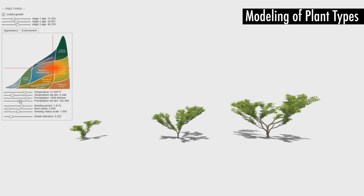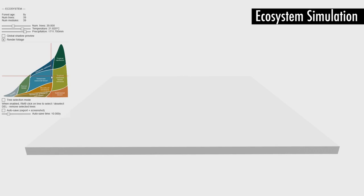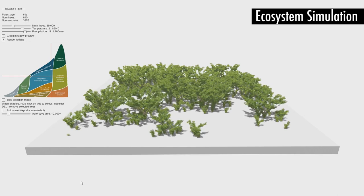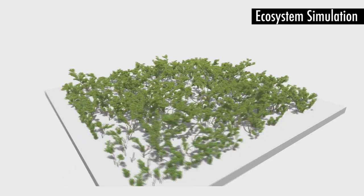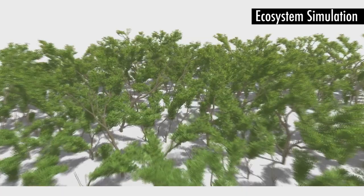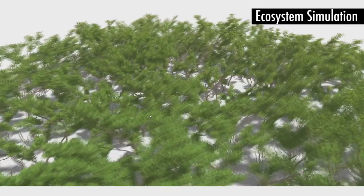The user can specify a seeding radius within the temperature-precipitation space for each plant type, defining in which biome the individual plant types will grow. After the parameters for all plant types have been set, the user can proceed to the simulation tab. The system will automatically select the correct plant types for a corresponding biome and grow each plant depending on the available resources. Once a satisfactory result has been achieved, the branch modules and their individual transformations, along with metadata for connectivity, branch diameter, plant type, and leaf flag can be exported, allowing for further use and post-processing, such as easy rendering in any off-the-shelf rendering software.